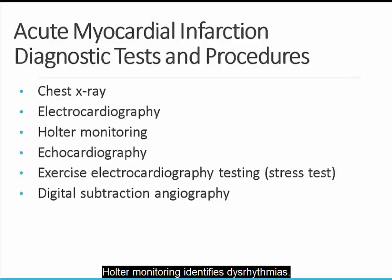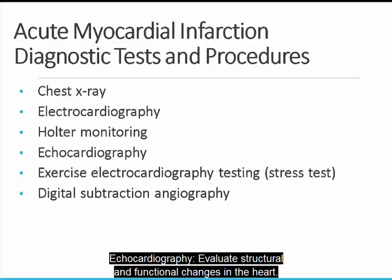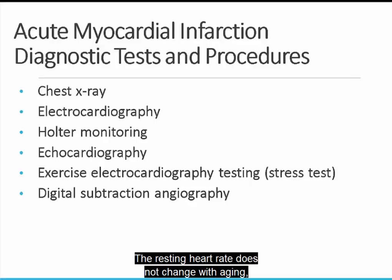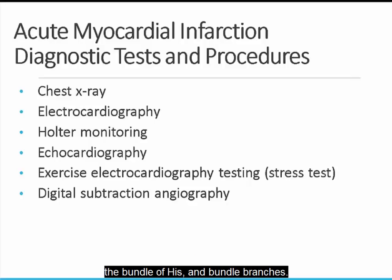Holter monitoring identifies dysrhythmias. A patient is instructed to resume normal activities and maintain a diary documenting activities and symptoms. Echocardiography evaluates structural and functional changes in the heart. The resting heart rate does not change with aging, so a decrease in heart rate would require further investigation. Bundle branch block and slight increases in PR interval or QRS duration are common in older individuals due to increases in conduction time through the AV node, the bundle of His, and bundle branches.